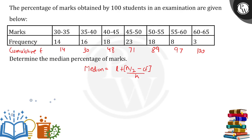From the table, we can put up all the values. n/2 = 100/2 = 50. So the observation lies in the class where cumulative frequency first exceeds 50. Counting through the classes — 1, 2, 3, 4, 5, 6, 7, 8 — the median class lies between 45 to 50.